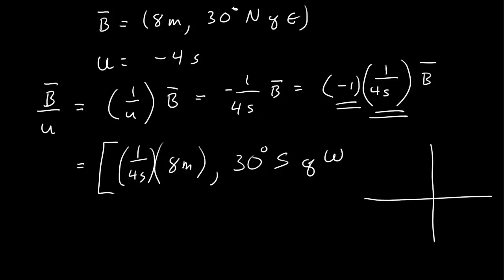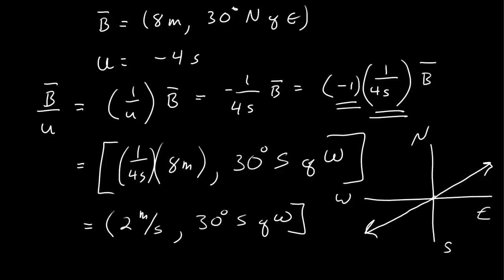Now, you may not see that immediately, but if you just go to your north and east, south and west, and draw 30 degrees north of east, and you flip it around in the opposite direction, you can see it's 30 degrees south of west. So now, if I just multiply this out, I get a vector that is 2 meters per second is the magnitude, and the direction 30 degrees south of west.